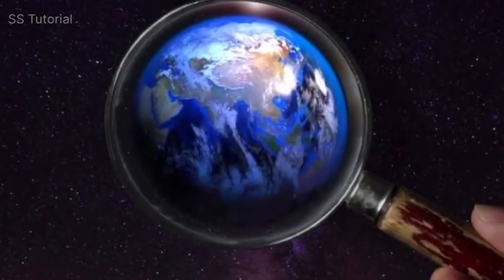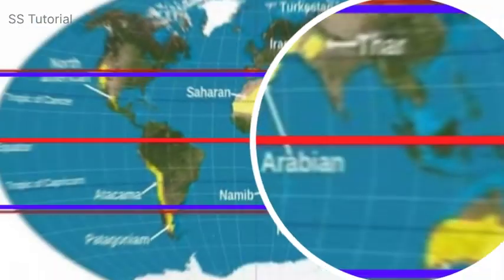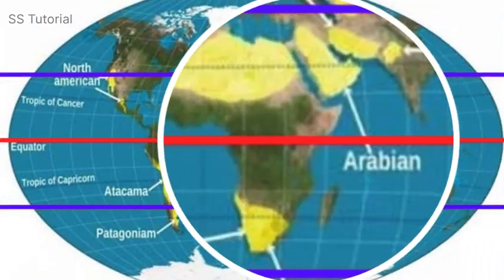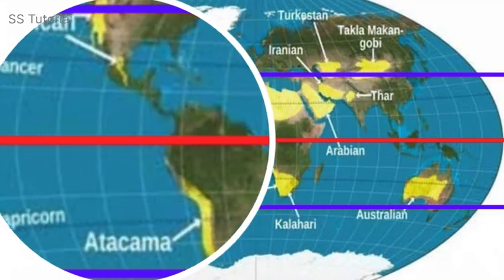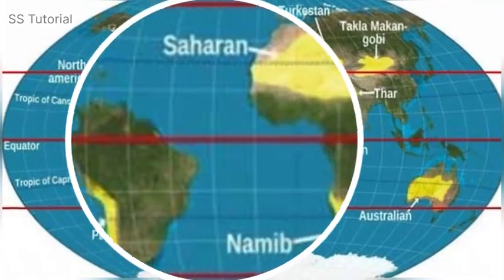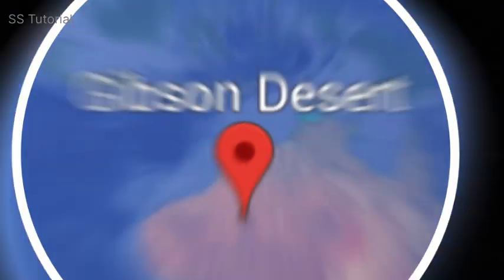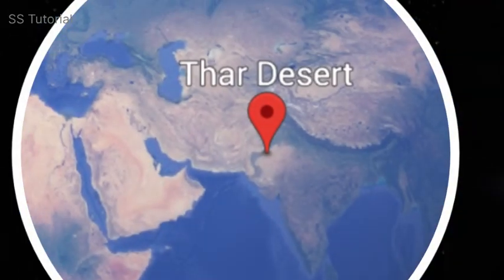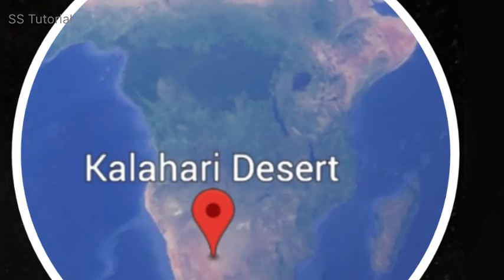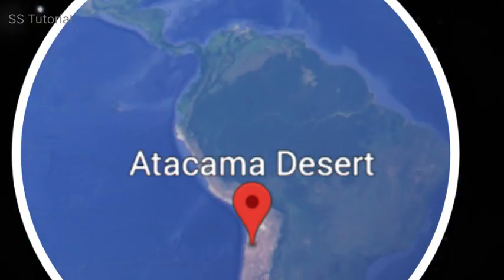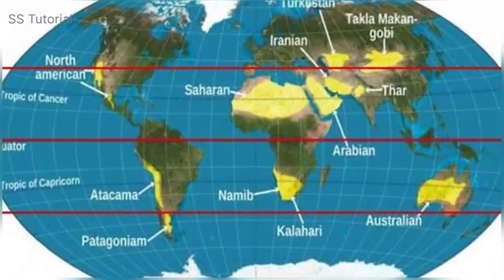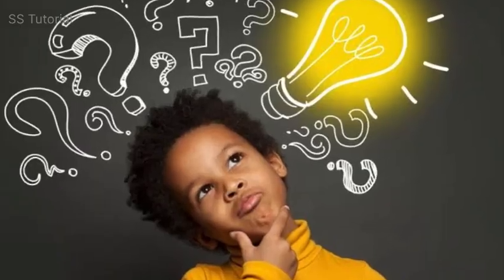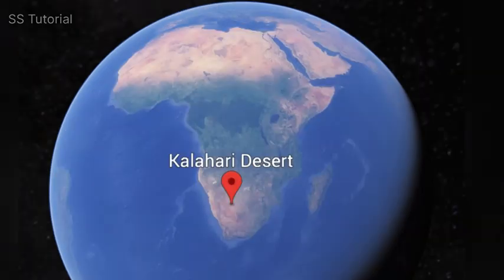If you look at the world map, you must notice that almost all the tropical deserts of the world are situated between 20 and 30 degrees north and south latitudes. Most of them are situated on the western edge of the continent — like the Great Sandy and Gibson Desert of Australia, Thar Desert of India, Namib and Kalahari Desert of Africa, Atacama Desert of South America, and Sonoran Desert of North America — all situated on the western part of the continent.